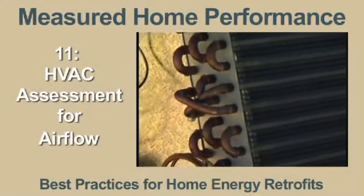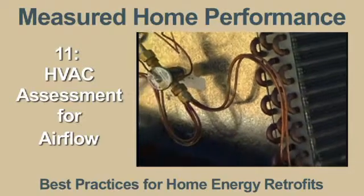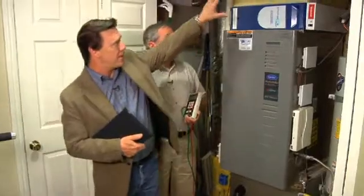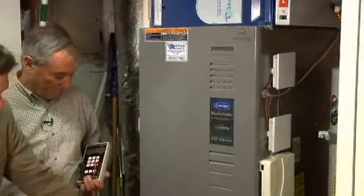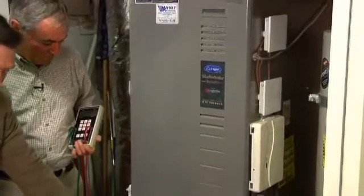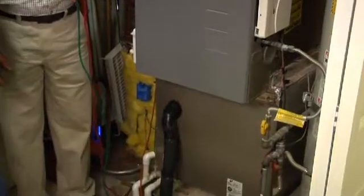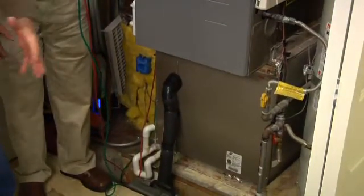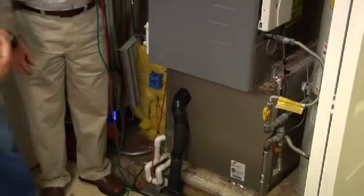A major factor that affects the performance and comfort of a heating and cooling system is air flow across the coil. When we look at a traditional HVAC system, typically what we have — and certainly in this case here — we have return air ducts, an air cleaner, a forced air furnace, and then our evaporative or cooling coil, and that goes into our supply plenum, which is the start of our distribution system — the ductwork that supplies cool air in air conditioning mode throughout the home.